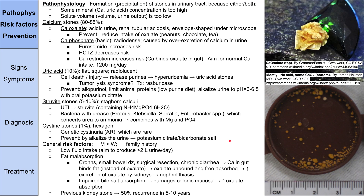There are also some general risk factors for all types of stones. In general, men get them more than women, and people with family histories of kidney stones are predisposed. One risk factor is simply not drinking enough water — you should drink enough to produce at least two liters of urine a day. Staying hydrated definitely helps prevent all kinds of stones.